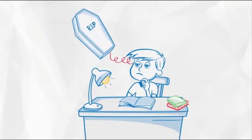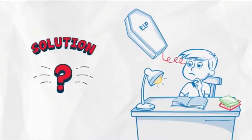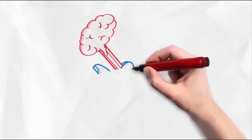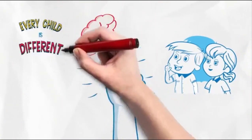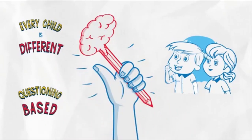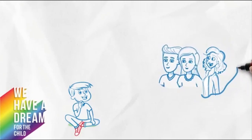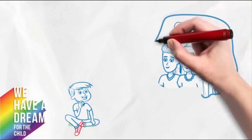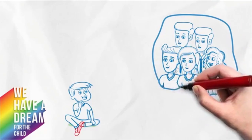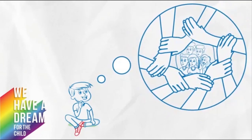Now we face a million problems in the world for which we are only awaiting answers. The solution is an education system that recognizes every child is different and is questioning-based, so that it brings out extraordinary human potential in every child. Dream for the Child is a nationwide movement which calls upon every teacher, every parent, every educator, every policy maker — everyone who has a role in a child's development — to join hands together to reform the education system and bring out the human potential in every child.